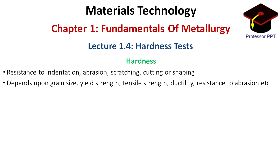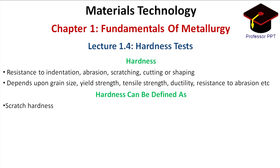The hardness of a metal or an alloy may be defined in one or more of the following forms: scratch hardness, indentation hardness, rebound hardness, and micro hardness.